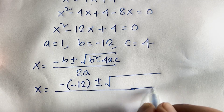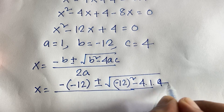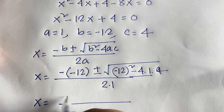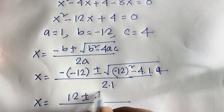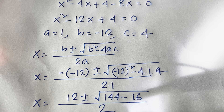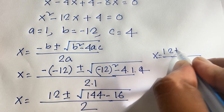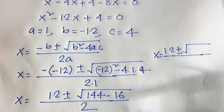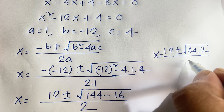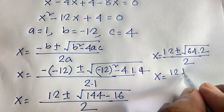Substituting: b squared is (−12)² equals 144, minus 4 times 1 times 4 equals 16, over 2 times 1. So x equals 12 plus or minus square root of 144 minus 16, which is 128. And 128 equals 64 times 2, so square root of 128 equals 8 square root 2.